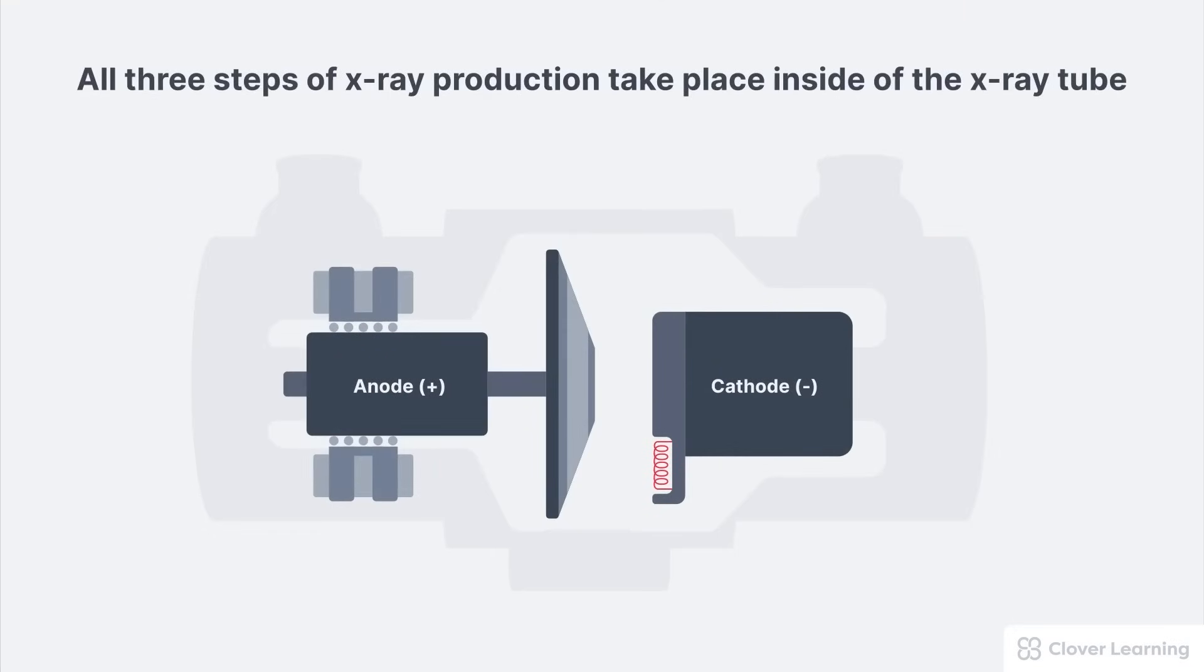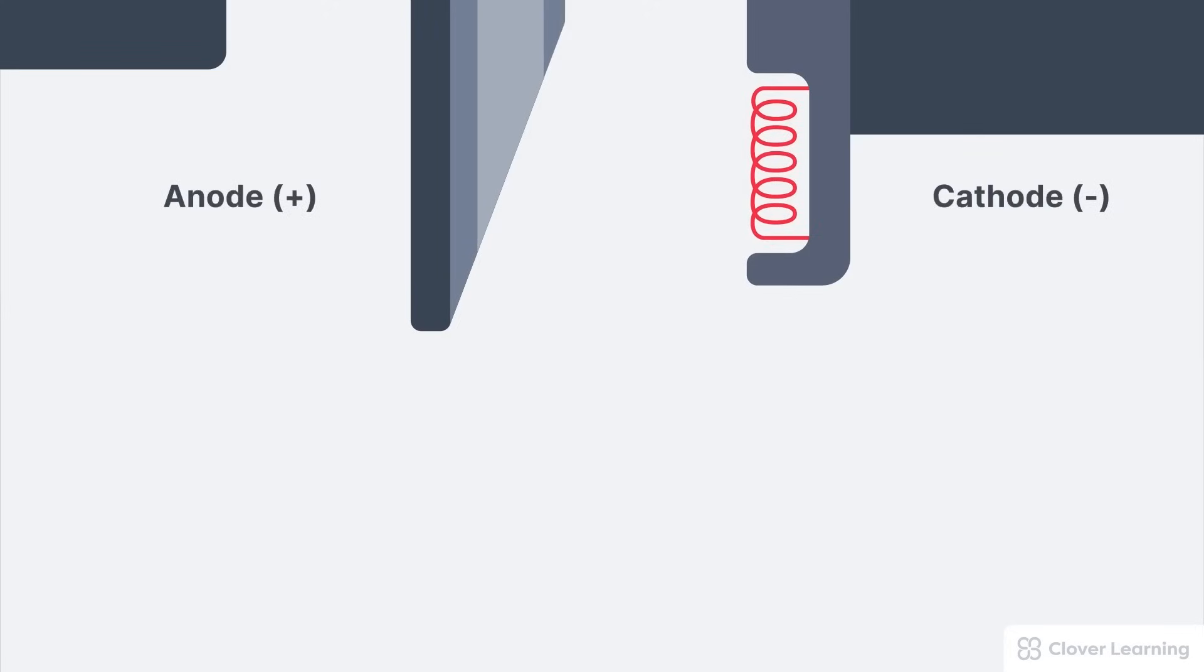In radiography, all three steps of X-ray production take place inside of the X-ray tube.